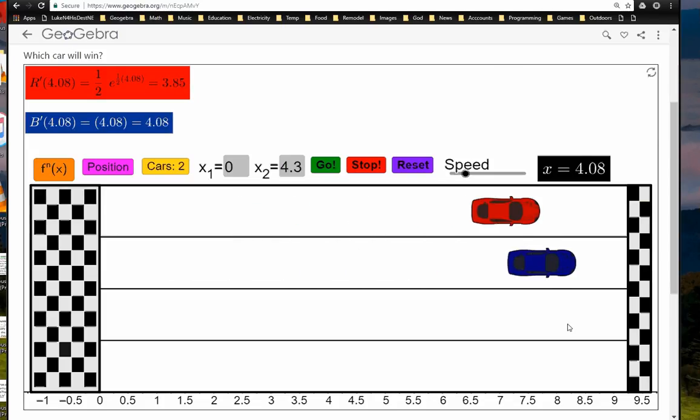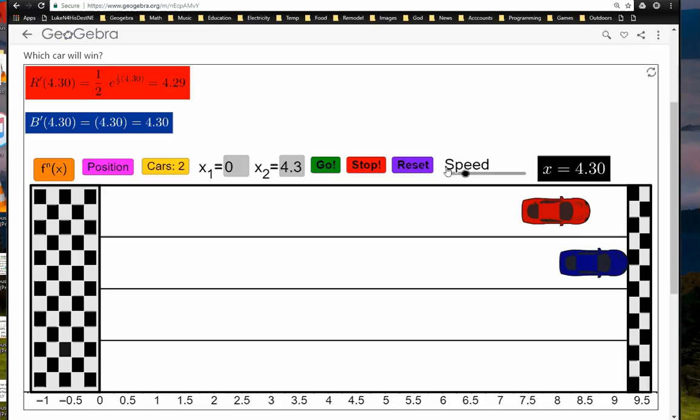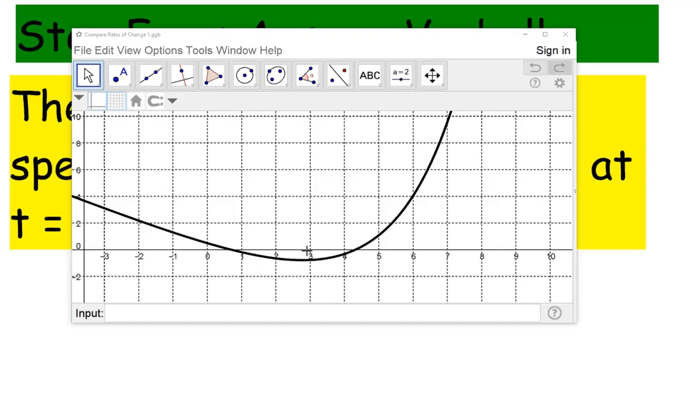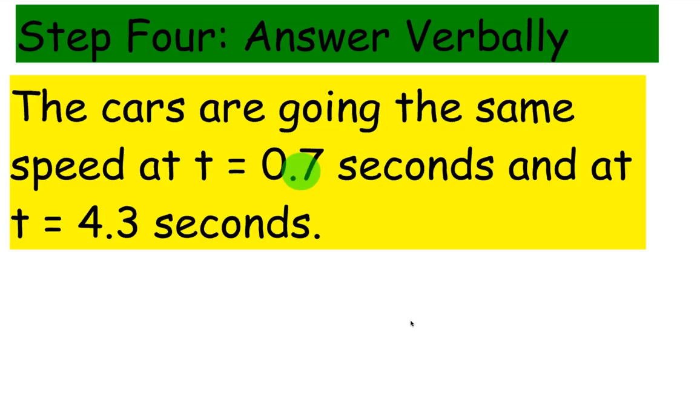Now let's see what this looks like on the graph. Here's what happens when I graphed that. When I set them equal to each other and moved everything to one side, we can see that it crosses the x-axis here, crosses right here at 0.7 and around 4.3. So that's it for this example.